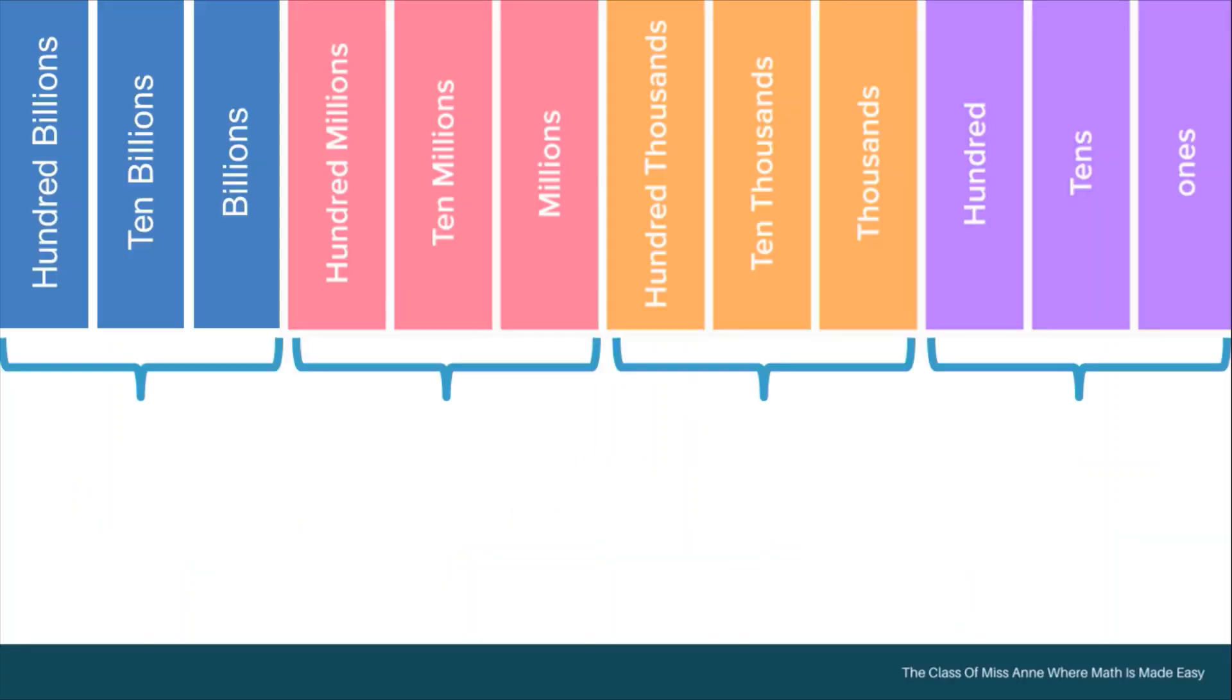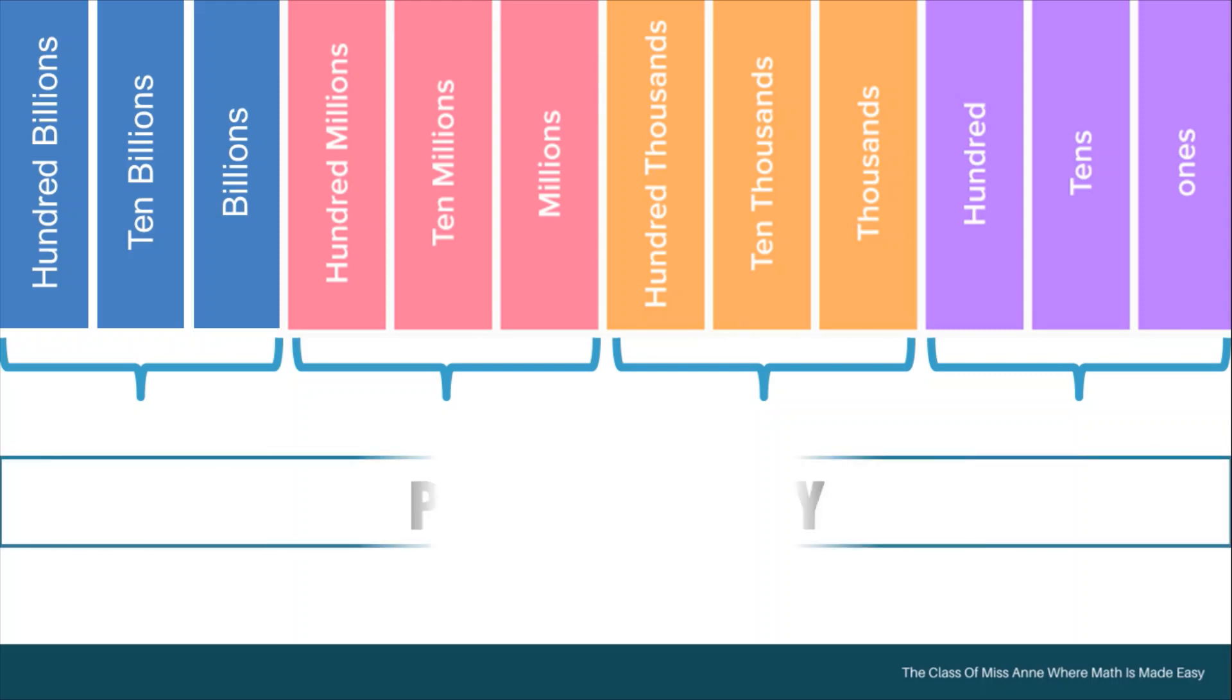Today, we are going to talk about how we read and write numbers using the place value chart. As you can see, place values are grouped by what we call period or family. Each period or family is composed of three place values. These periods help in representing the value of each digit in a number.